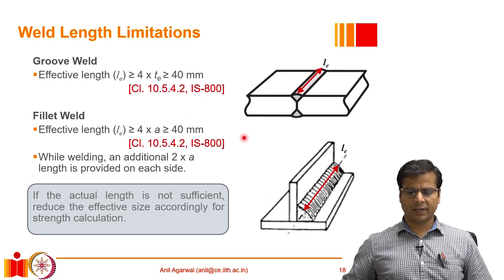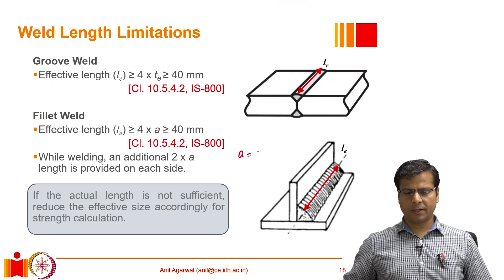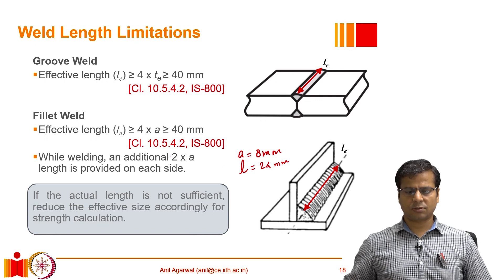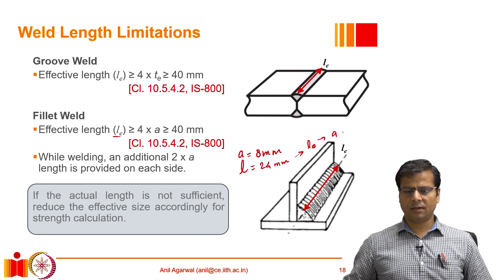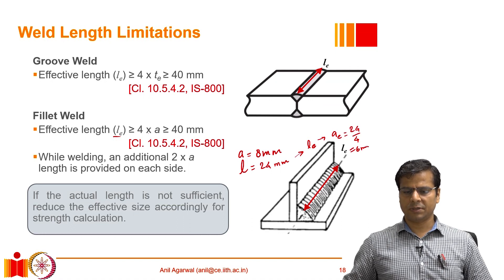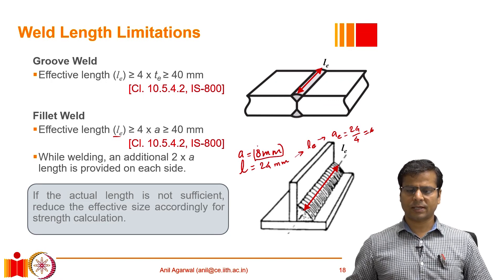For example, if we are providing an 8 millimeter weld but the length of the weld provided is only 24 millimeters, this does not satisfy the requirement that effective length should be greater than 4 times the weld size. In this case, we take 24 mm as the effective length and the effective size A becomes 24 divided by 4, which is 6 millimeters. For design calculations, we will use only 6 millimeters — we reduce the weld size.